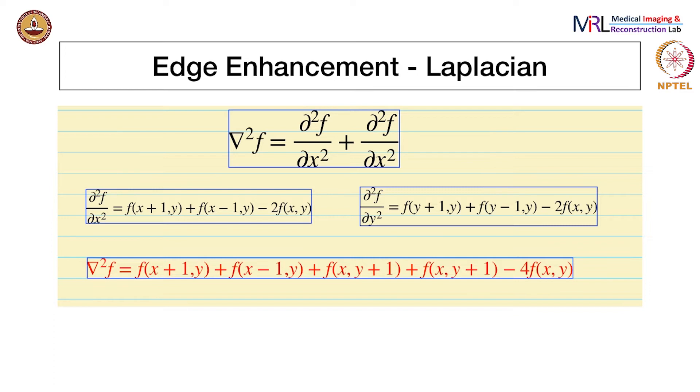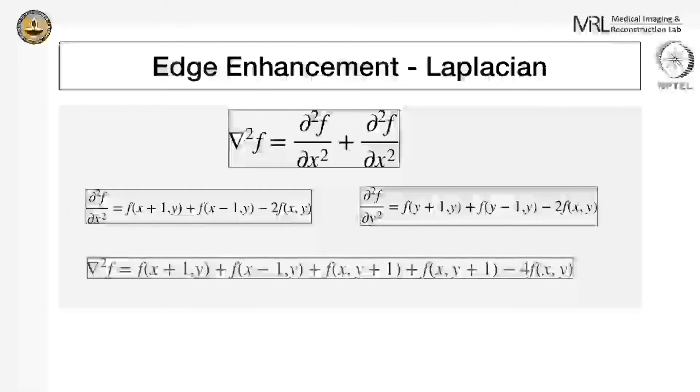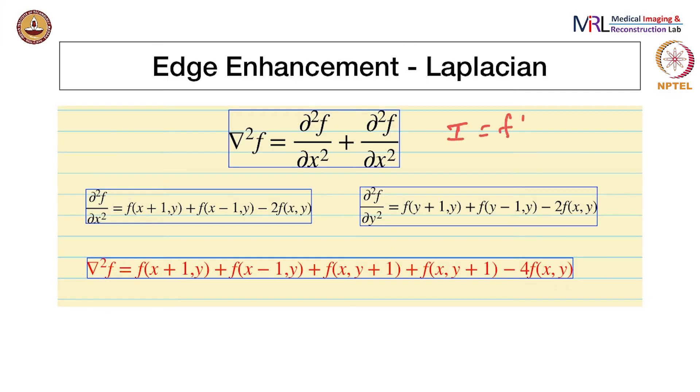Basically we will look at the Laplacian of an image and how we define gradients of an image. The first operator we're going to look at is the Laplacian, which is defined for continuous functions f. If we treat the image as i equals f of x comma y, the Laplacian of f is given by this expression right there.